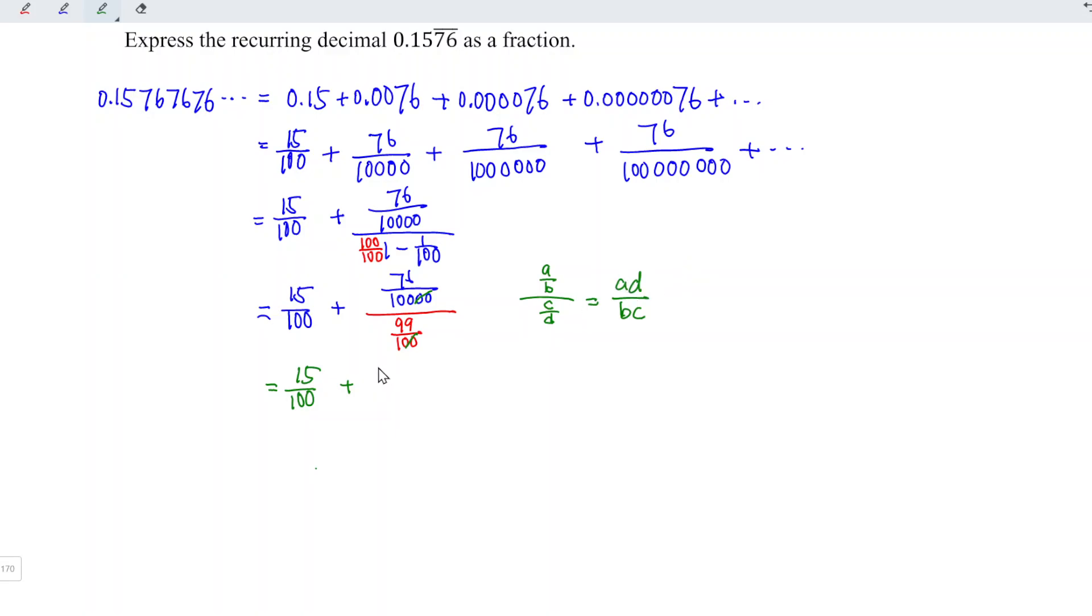We have 76 and 100 times 99, which is 9,900.